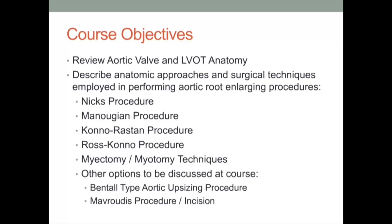This STS University course on aortic root enlargement procedures will have the following objectives. First, we will begin by reviewing aortic valve and left ventricular outflow tract anatomy. An understanding of the nomenclature employed to describe these structures and the geometry of their interaction will allow for a more focused investigation of various surgical techniques for performing aortic root enlargement. We will focus upon posterior enlarging techniques such as the Nicks and Manougian procedures, as well as anterior enlarging strategies including the Konno-Rastan aortoventriculoplasty and the Ross conolaortic valve replacement procedure.